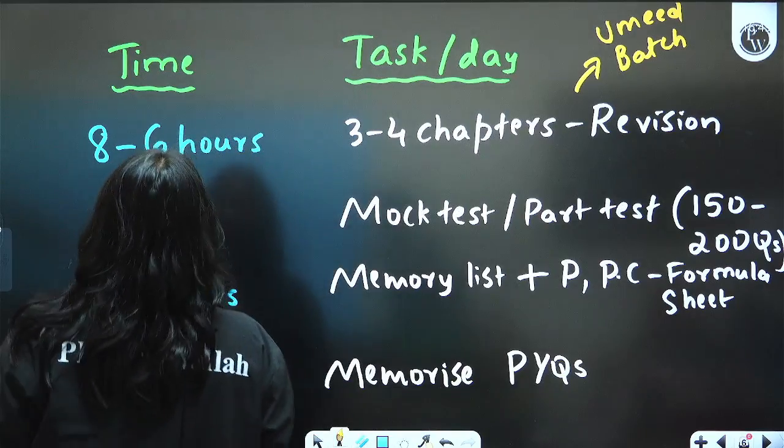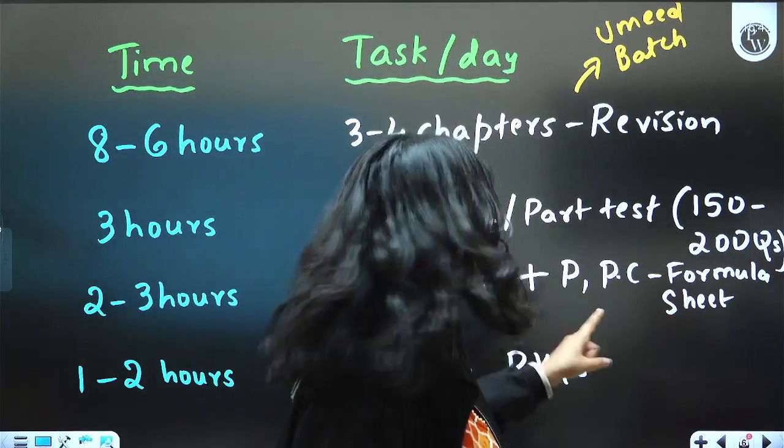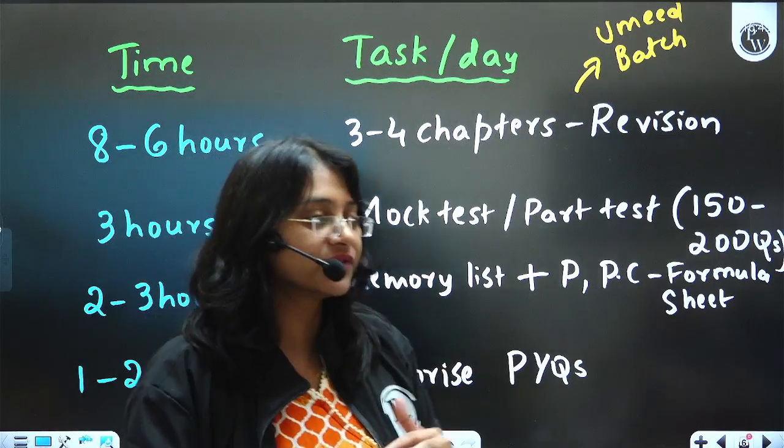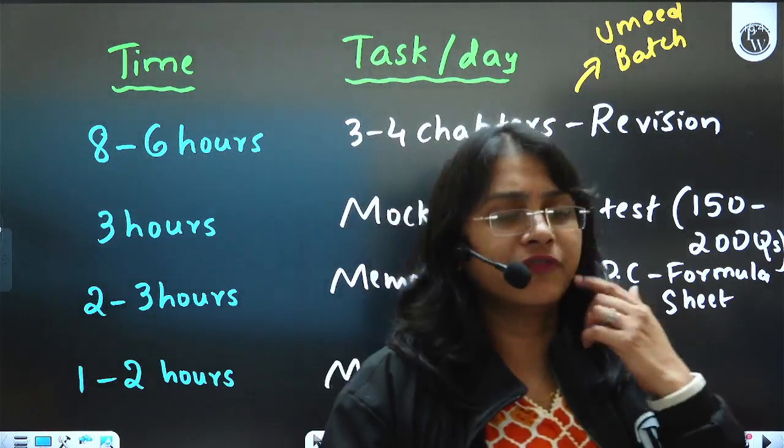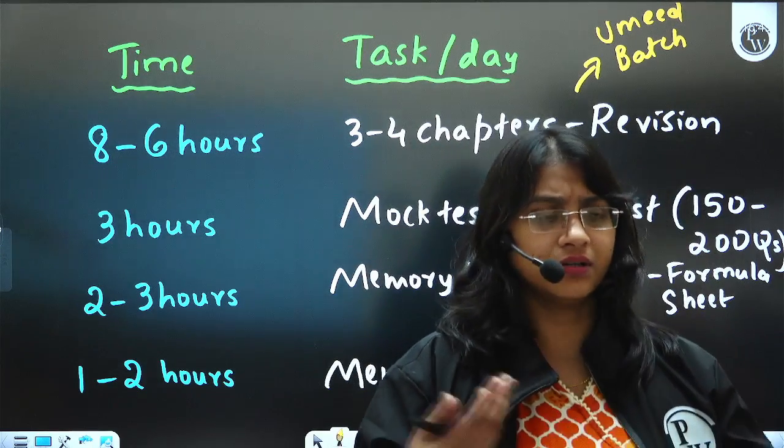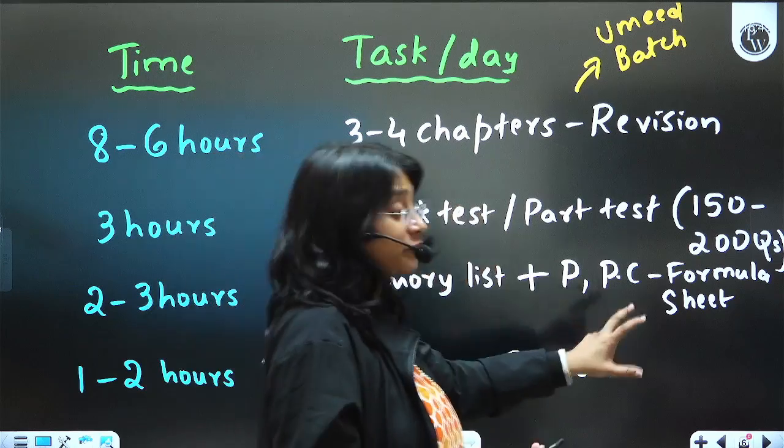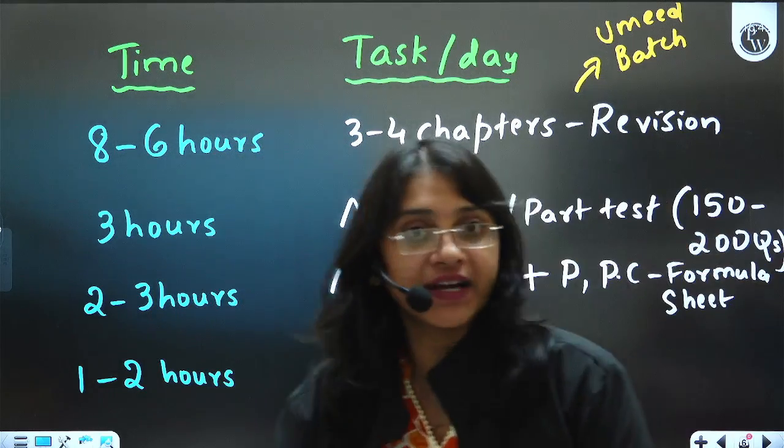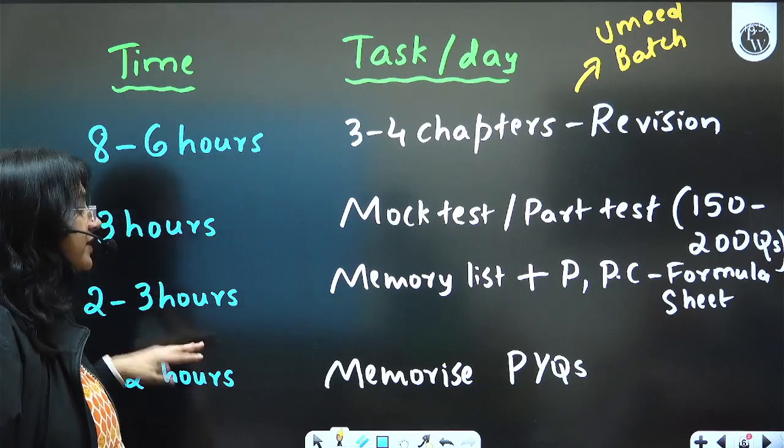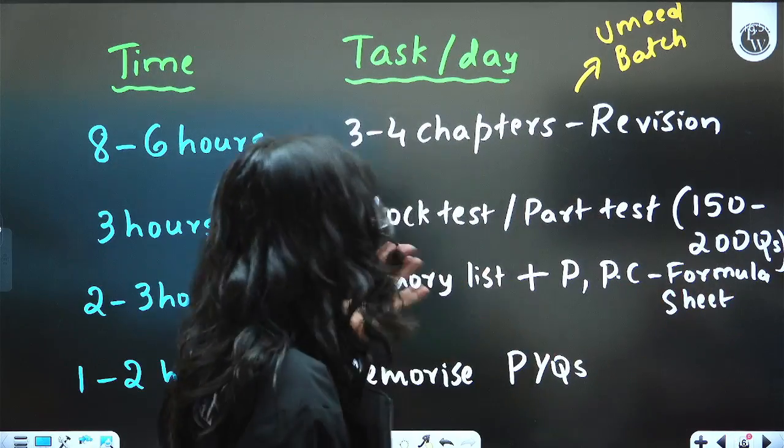And then another two to three hours, every day you have to go through the formula sheet of physics and physical chemistry. And also you would have done a memory list - that is, you would have done notes which have all the examples from plant kingdom, animal kingdom, or it would be having examples of contraceptives, all these things. So go through those memory lists plus formula sheets every day. This needs to be done every day. So you can take up to three hours to revise this memory list. As and when you go through this memory list every day, the time that you will be spending on this would be reduced.